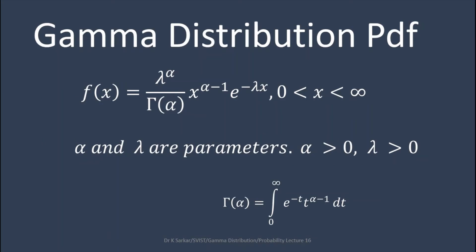Gamma distribution PDF is f(x) equals lambda to the power alpha divided by gamma alpha, x to the power alpha minus 1, e to the power minus lambda x, where 0 less than x less than infinity. Alpha and lambda are parameters: alpha greater than zero, lambda greater than zero.